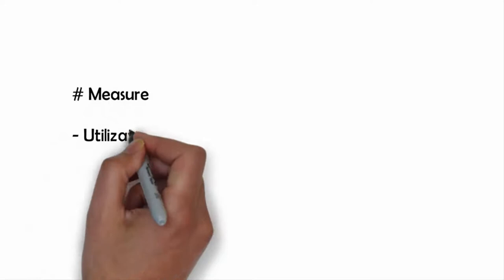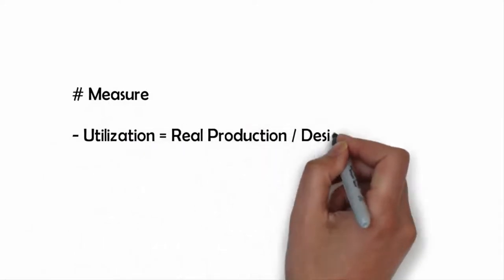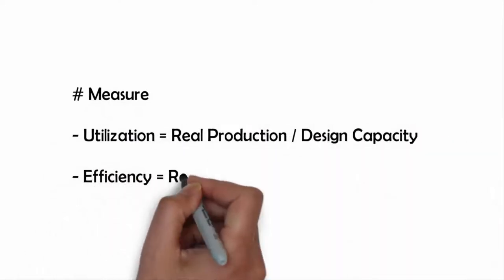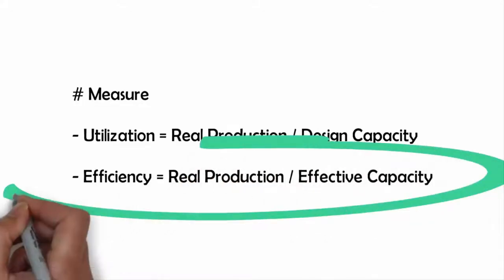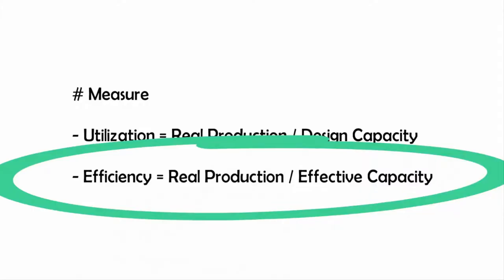Measure: Utilization equals real production over design capacity. Efficiency equals real production over effective capacity. Efficiency is the main driver for the operations director.